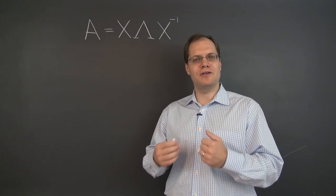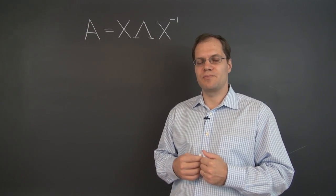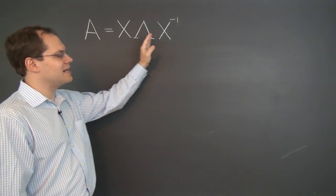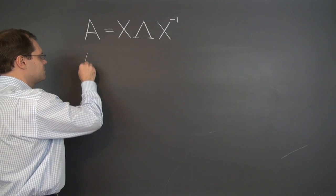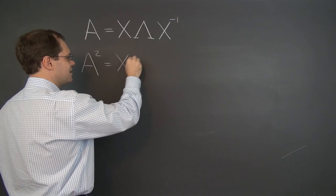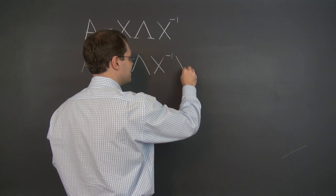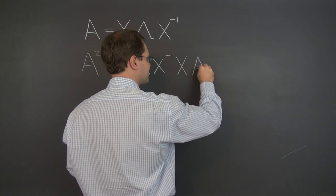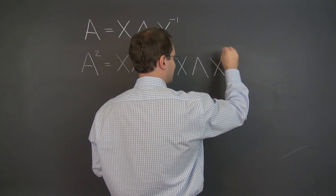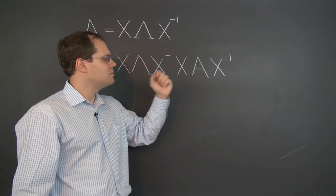Here is the first example of what you can do easily if you know the eigenvalue decomposition of a matrix. For example, you can square a matrix, and here is why. If A is X lambda X inverse, then A squared is of course A times A. We can write A as X lambda X inverse, that's one A, and let's write next to it the other A, which is also X lambda X inverse. Now we notice something very nice and satisfying, and that's X inverse meets X.